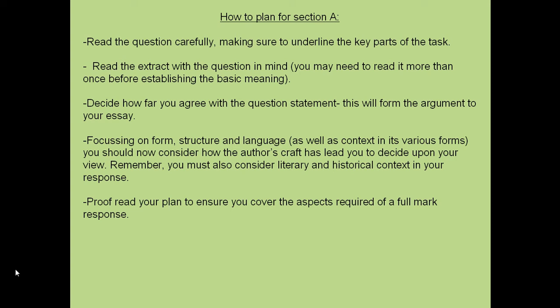Now, to prove that your argument is right, you need to think about your AO2 and your other elements of the assessment objectives. So focus on your form, structure and language, as well as context, and consider how the way in which the writer has created the text proves that you are correct. You want to come up with probably two or three separate points, or you might want to come up with one central argument and explore two, three, or even four different areas of the text which support your argument. Once you've done that, proofread that plan, because a perfect plan means you're going to create a perfect response.